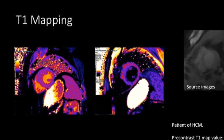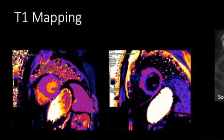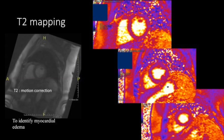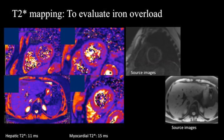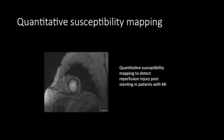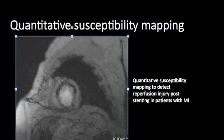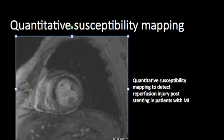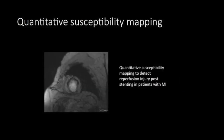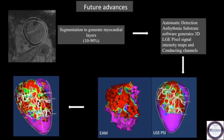Advanced sequences include T1 mapping, used to identify diffuse myocardial fibrosis; T2 mapping, used to identify myocardial edema; and T2-star mapping, used to evaluate iron overload. Research sequences include quantitative susceptibility mapping to detect myocardial hemorrhage and identify reperfusion injury post-stenting. The LGE PSIR can be processed using a pixel signal intensity algorithm to generate 3D maps identical to electroanatomic voltage maps, and conducting channels can be identified on CMR to target sites of ventricular tachycardia and their RF ablation.